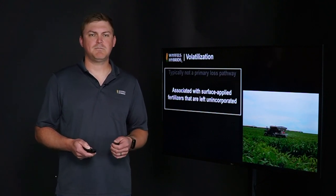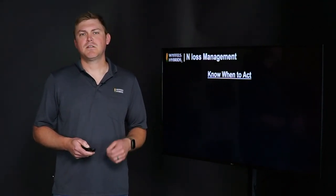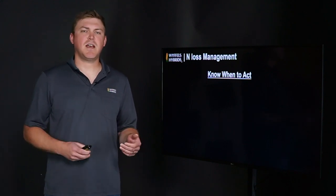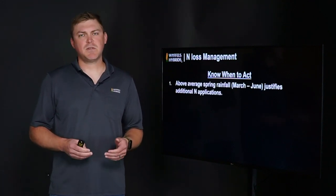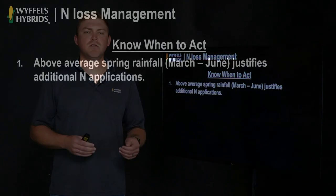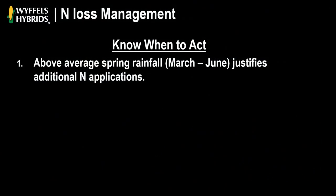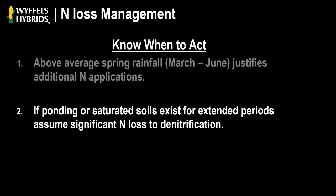Some management tips on knowing when to act: if you suspect nitrogen loss, above-average spring rainfall specifically between May and June usually justifies additional nitrogen applications. If ponding or saturated soils have existed for extended periods, assume you've probably lost some nitrogen. Keep in mind these are all temperature-dependent — if it's happening early season without warm temperatures to drive conversion, you've likely not lost a lot of nitrogen, especially if it's still in the ammonium form.